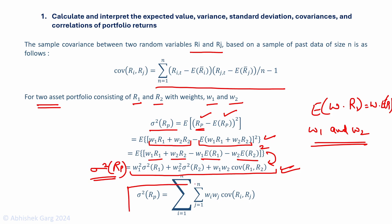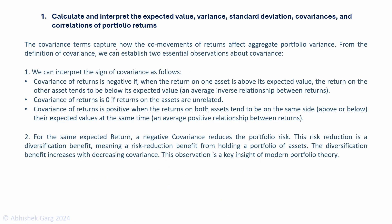This formula is generalized for more assets. The covariance term captures how the co-movements of returns affect aggregate portfolio variance. There are two essential observations. First, regarding the sign of covariance: when the covariance of returns is negative, it means the return on one asset is above its expected value while the return on the other asset tends to be below its expected value — an inverse relationship between returns.